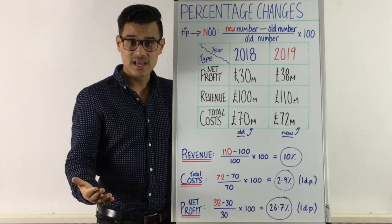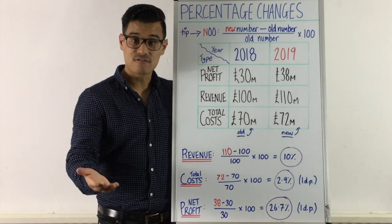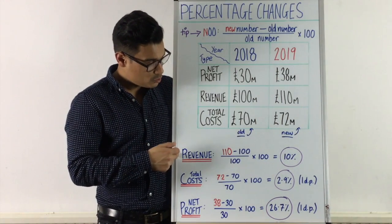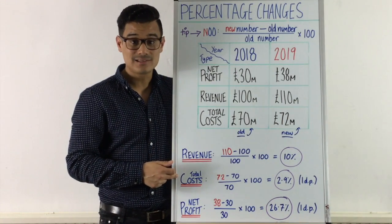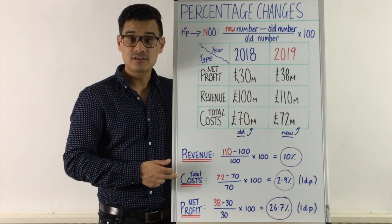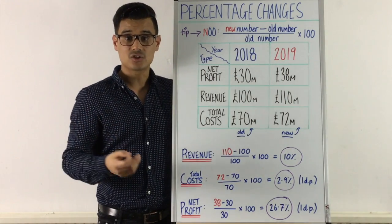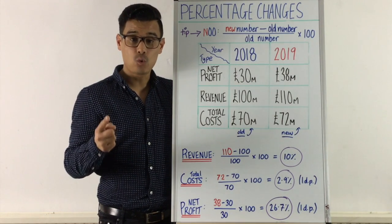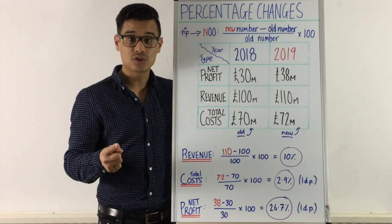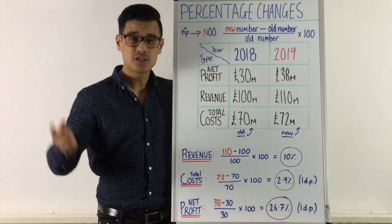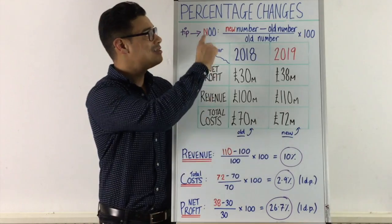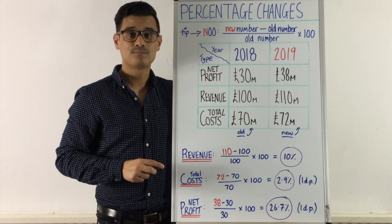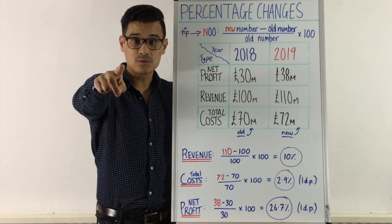That's fantastic. The reason profit is increasing at such a faster percentage rate is because revenue is increasing but total costs aren't increasing as quickly as revenue. When you think about profit equals revenue minus costs, that's why it's brilliant — if revenue is moving at a quicker percentage change than total costs. I hope that helps with percentage changes. Make sure you write down NUUU because it's guaranteed to be two or three marks in the paper. I hope you're enjoying these videos and I'll see you at the next one.